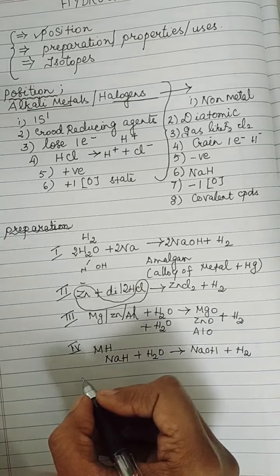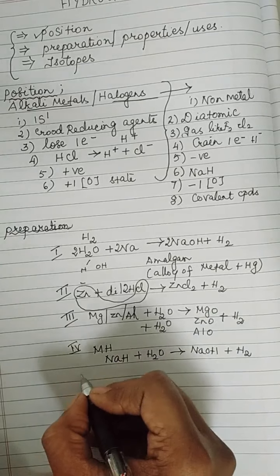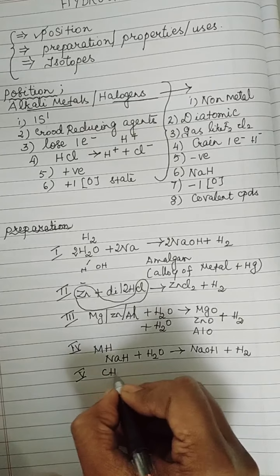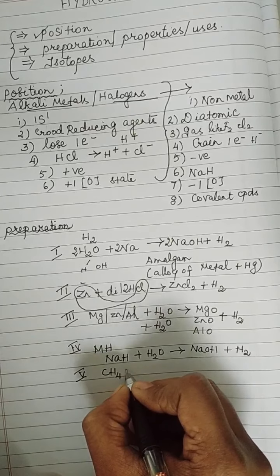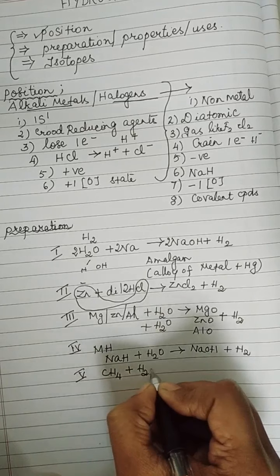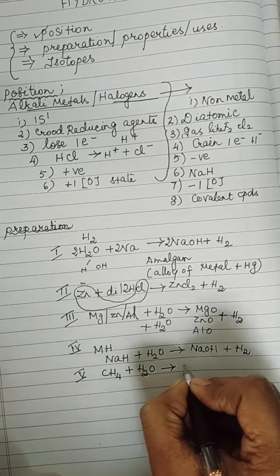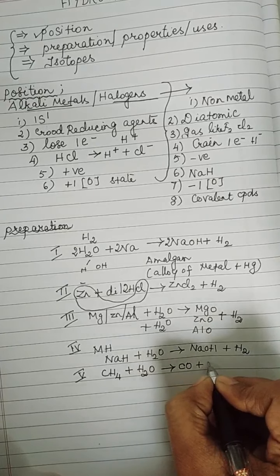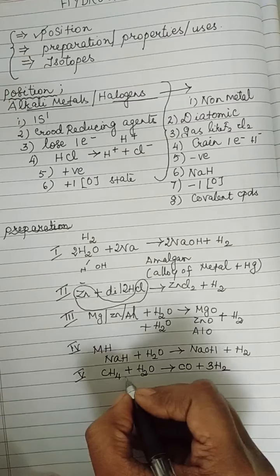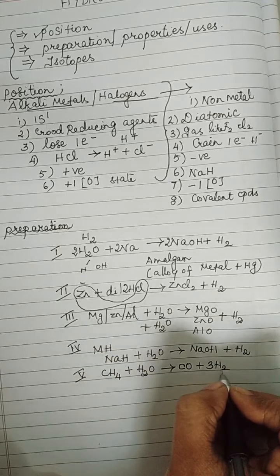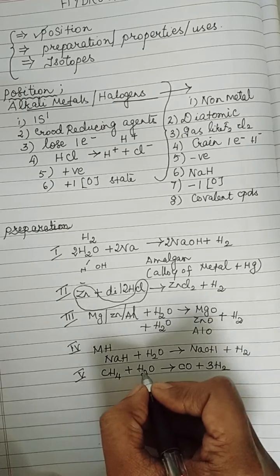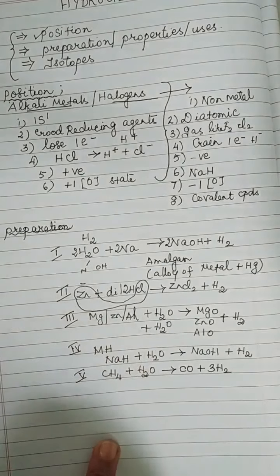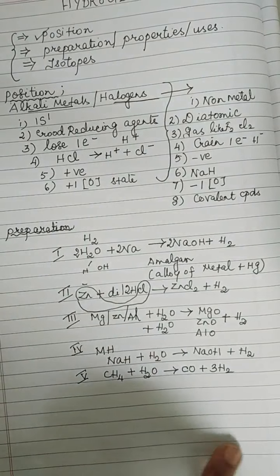The fifth and last method: treat methane (CH₄) with steam. The products are carbon monoxide and hydrogen: CH₄ + H₂O → CO + 3H₂. So these are the five steps involved in the preparation of hydrogen.